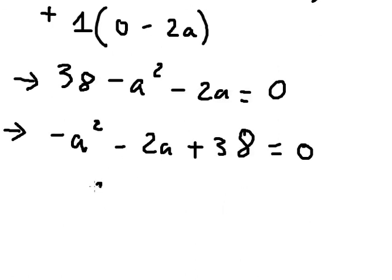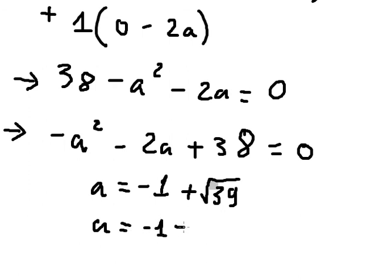So a equals negative 1 plus the square root of 39, and the second one, a equals negative 1 minus the square root of 39.